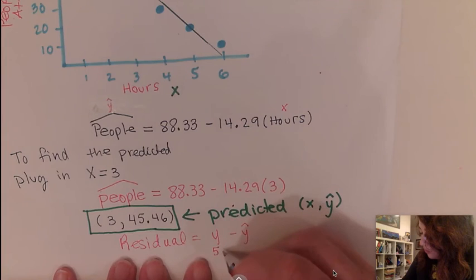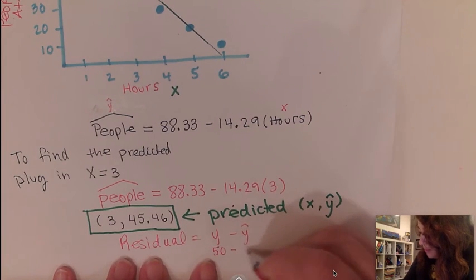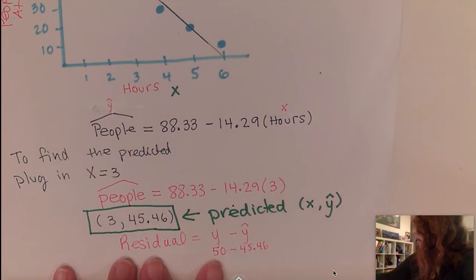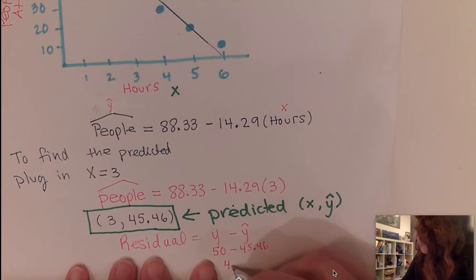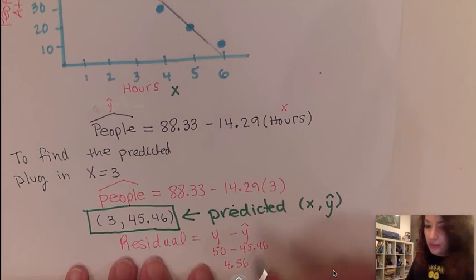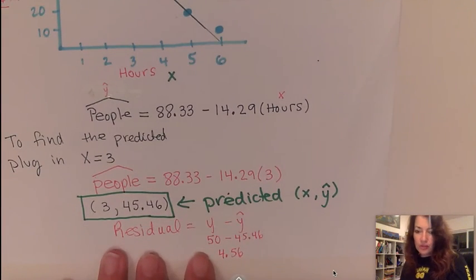So the actual Y value is 50 people minus the predicted is 45.46. So our residual, if we use a calculator, we will have a residual of 4.56. So that's how we calculate the residual.